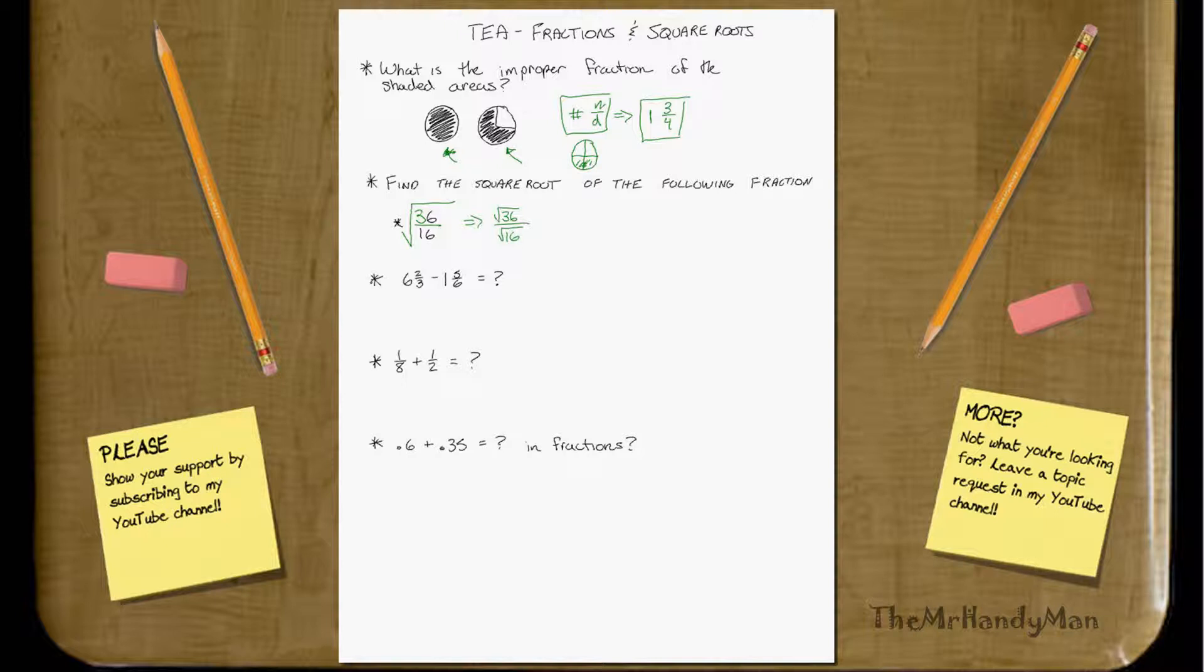Well, we know that 6 times 6 is 36, so the square root of 36 is just going to be 6. And it's the same way with 16. 4 times 4 is 16, so the square root of 16 is 4. And that equals 3 over 2, which equals 1.5.